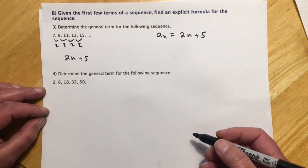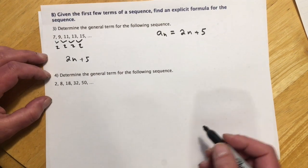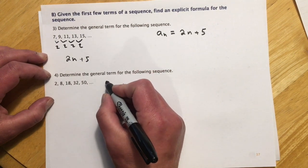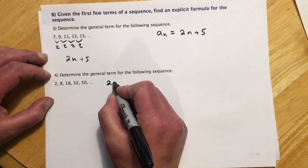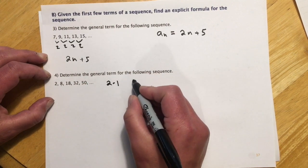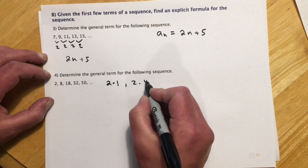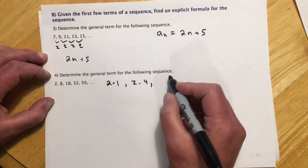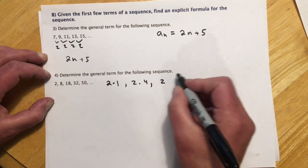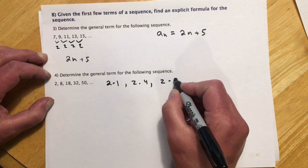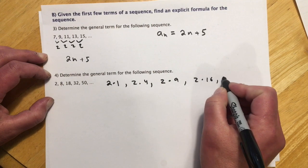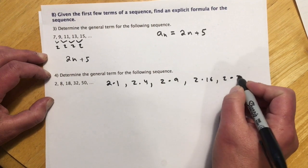This next one is really tricky. So looking at it, the thing that jumps out at me is this is like 2 times 1. If I divide 8 by 2, that would be 2 times 4. If I divide 18 by 2, because there's definitely like a factor of 2 in here. 2 times 9, 2 times 16, and 2 times 25.